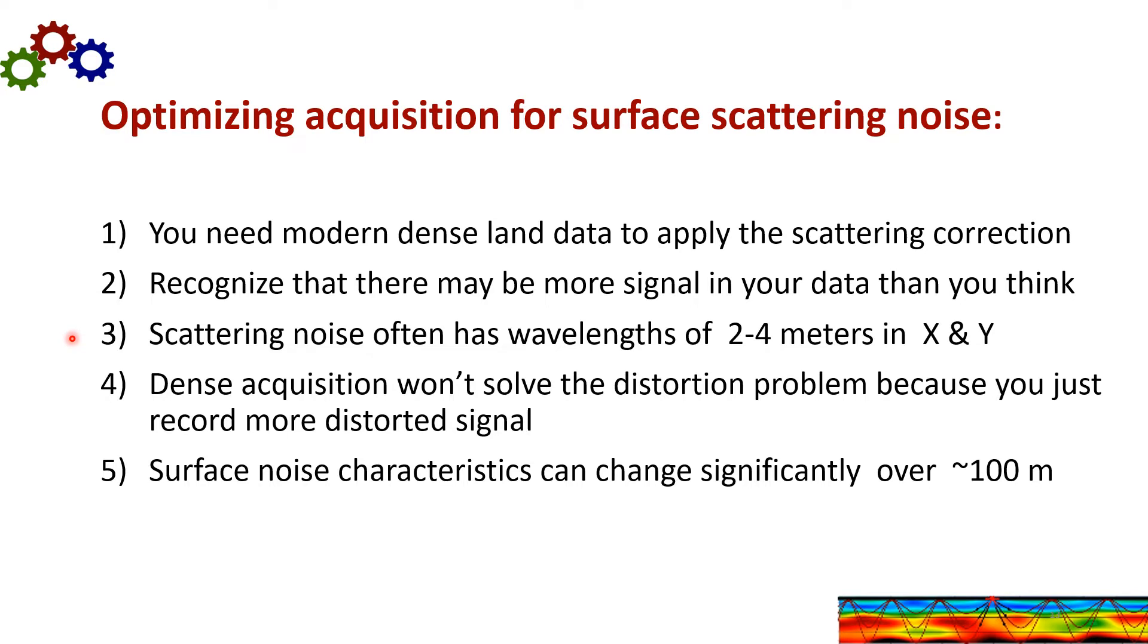Scattering noise often has wavelengths of 2 to 4 meters in X and Y. And this has several significant implications. Dense acquisition in itself won't solve the regional distortion problem. Because you just end up recording more distorted signal.